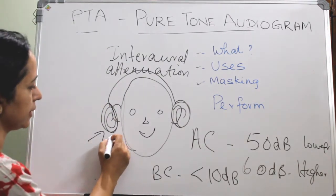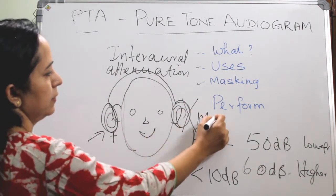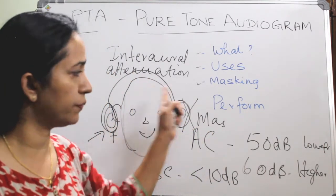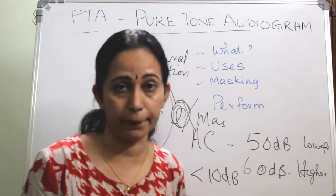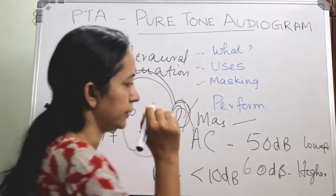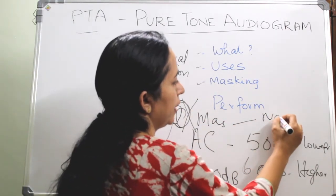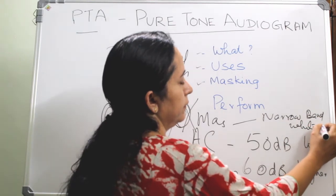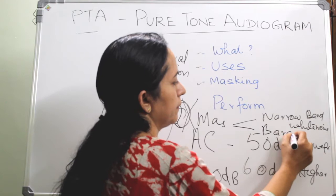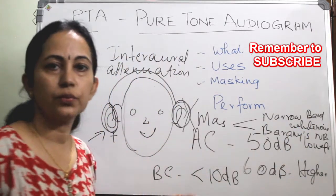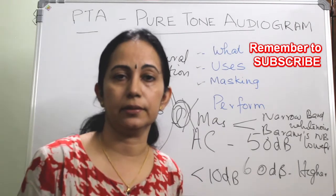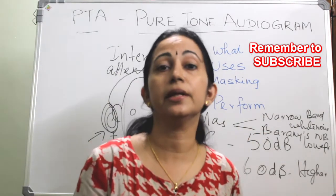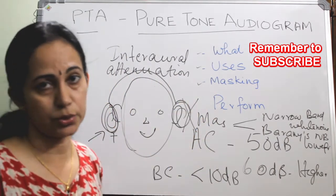To overcome this crossover, we use masking. If we are testing one ear, the opposite side should be masked using a sound higher than the test frequency, so the effect of inter-aural attenuation will not occur. We mask using a narrow band white noise. When you give the true stimulus to the testing ear, the opposite ear is masked by giving this noise, nullifying the effect of inter-aural attenuation. This is masking — usually asked as a short note.